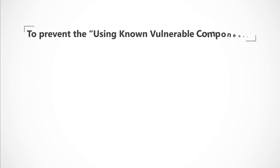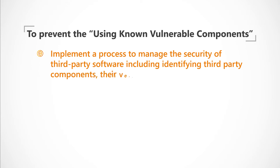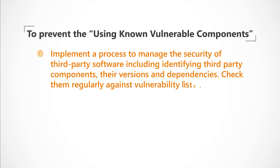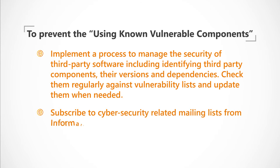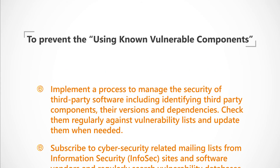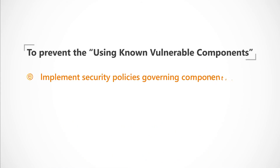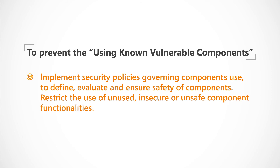To prevent the using known vulnerable components vulnerability, developers should implement a process to manage the security of third-party software. This should involve identifying third-party components, their versions and dependencies, and checking them regularly against vulnerability lists and updating them when needed. Developers should subscribe to cybersecurity-related mailing lists from information security sites and software vendors, and must also regularly search vulnerability databases. Furthermore, implement security policies governing components' use to define, evaluate and ensure safety of components. Restrict the use of unused, insecure or unsafe component functionalities.